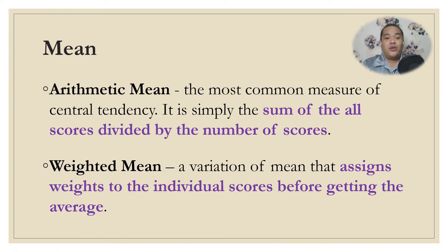We will start with the mean. There are two types of mean: the first is the arithmetic mean, which is the most common measure of central tendency. It is obtained by summing up the scores in a given data set and then dividing the result by the number of scores. The weighted mean, on the other hand, is a variation that assigns weights to each score; we multiply these weights by their corresponding scores and then get their average.